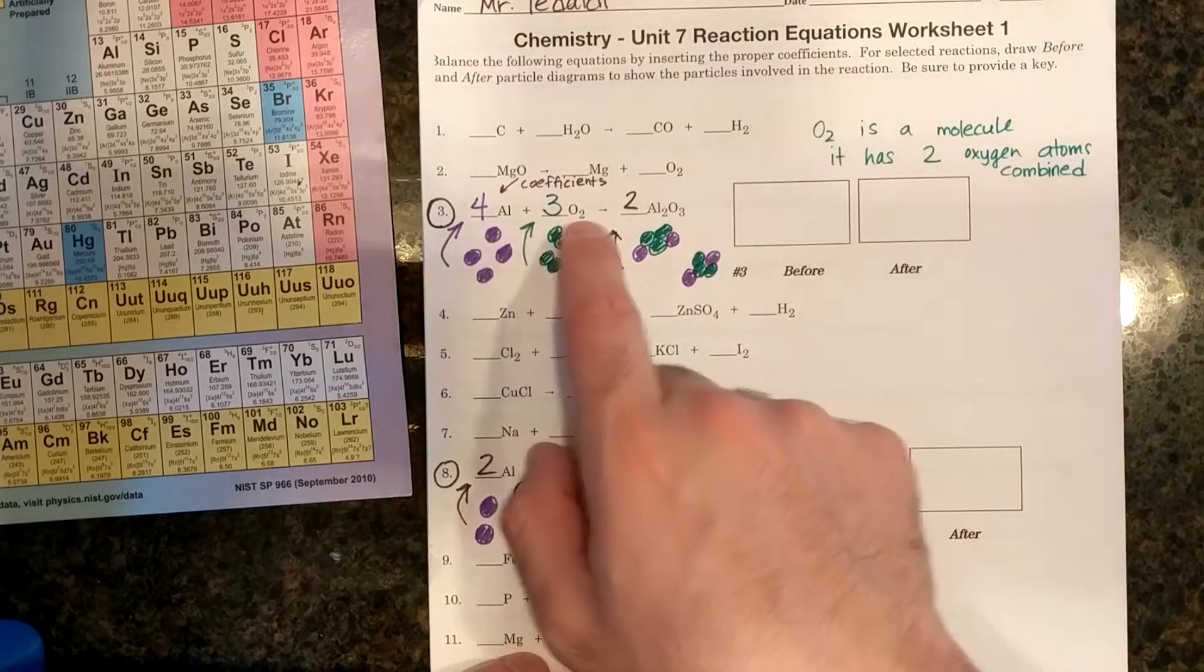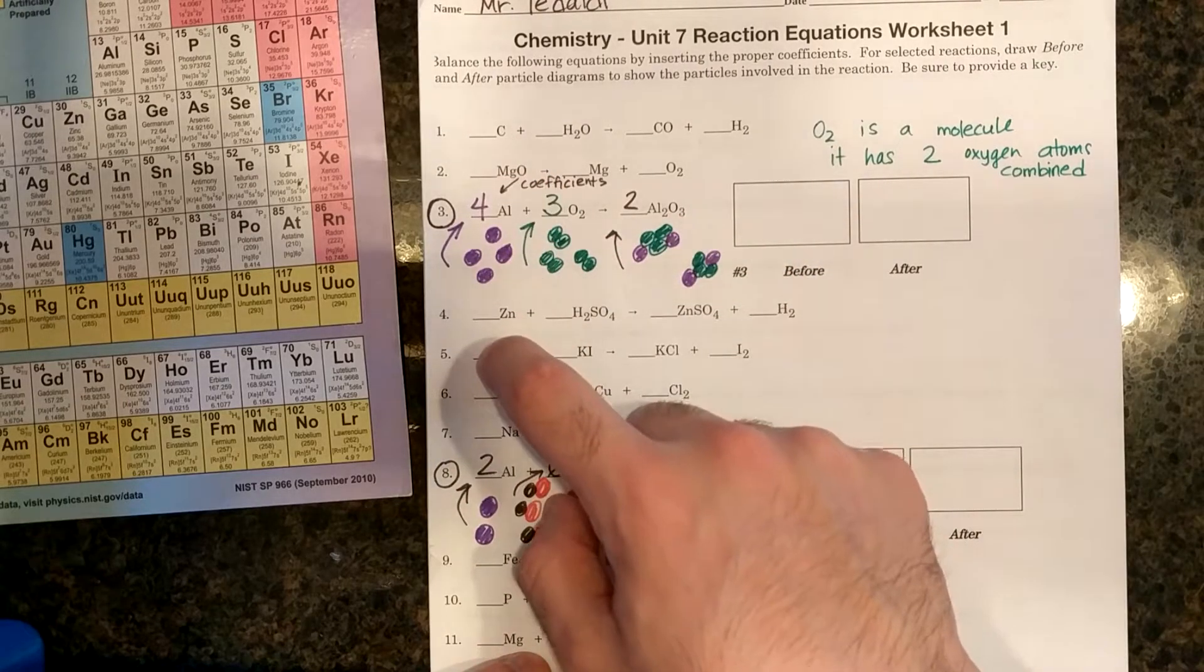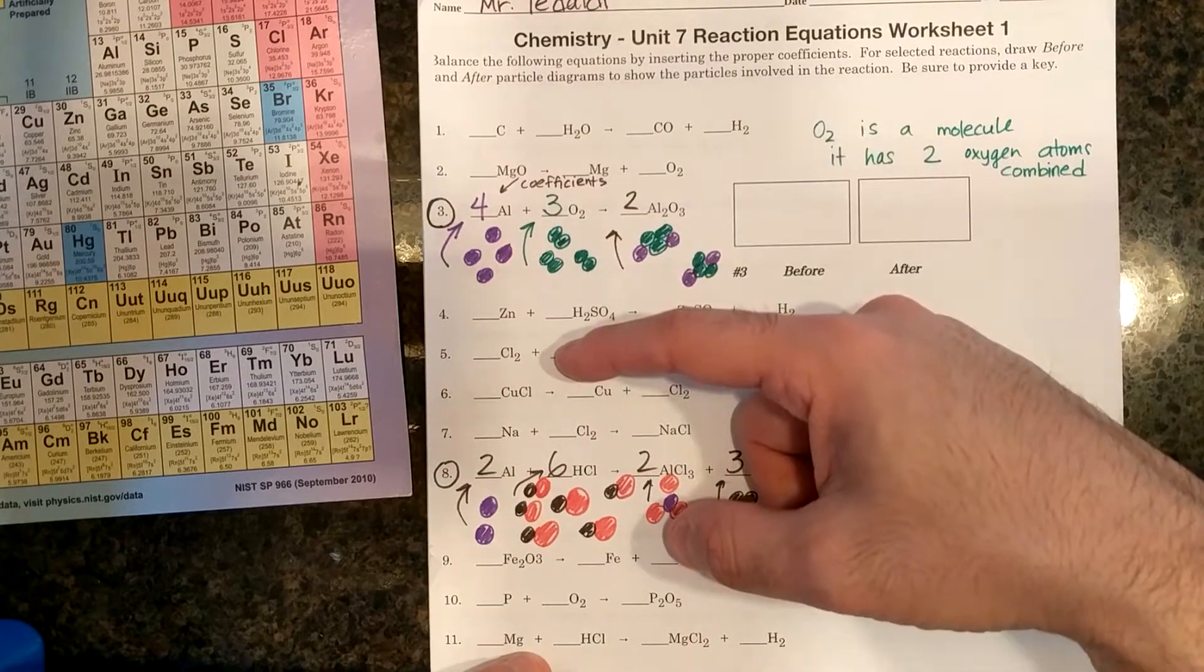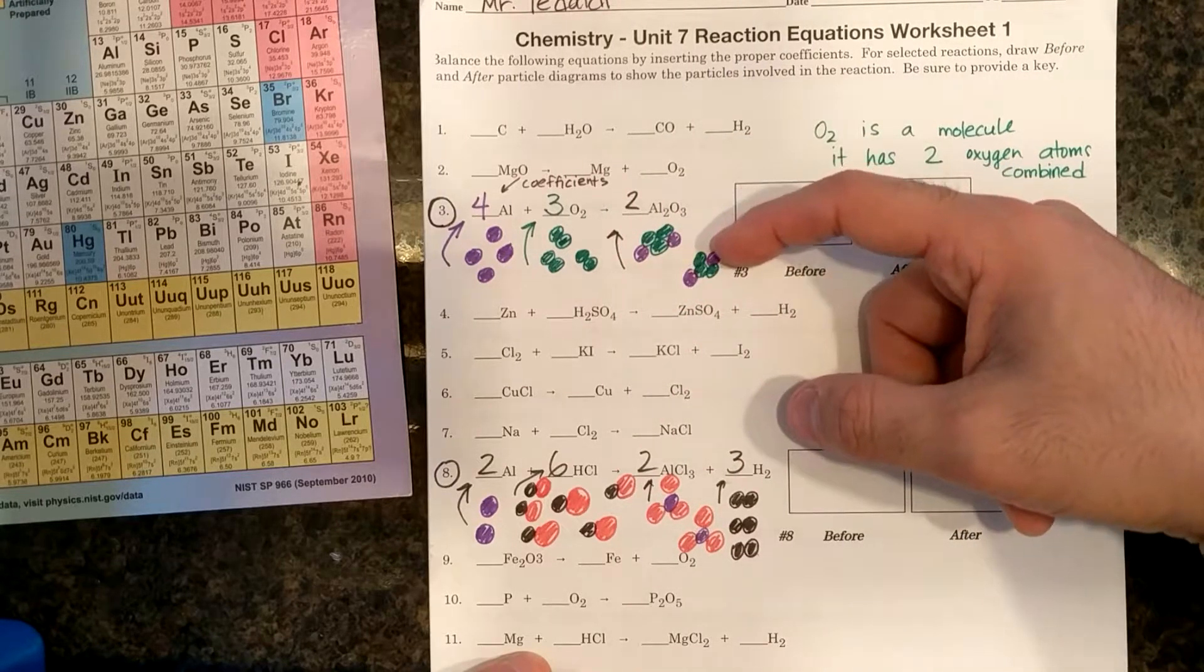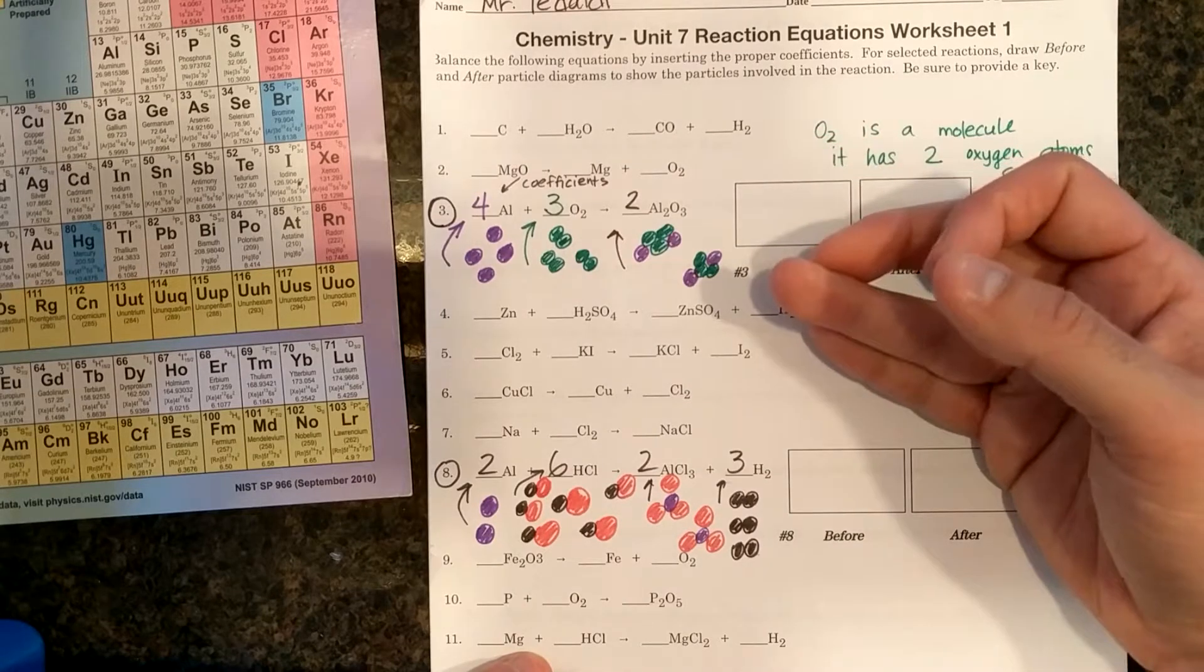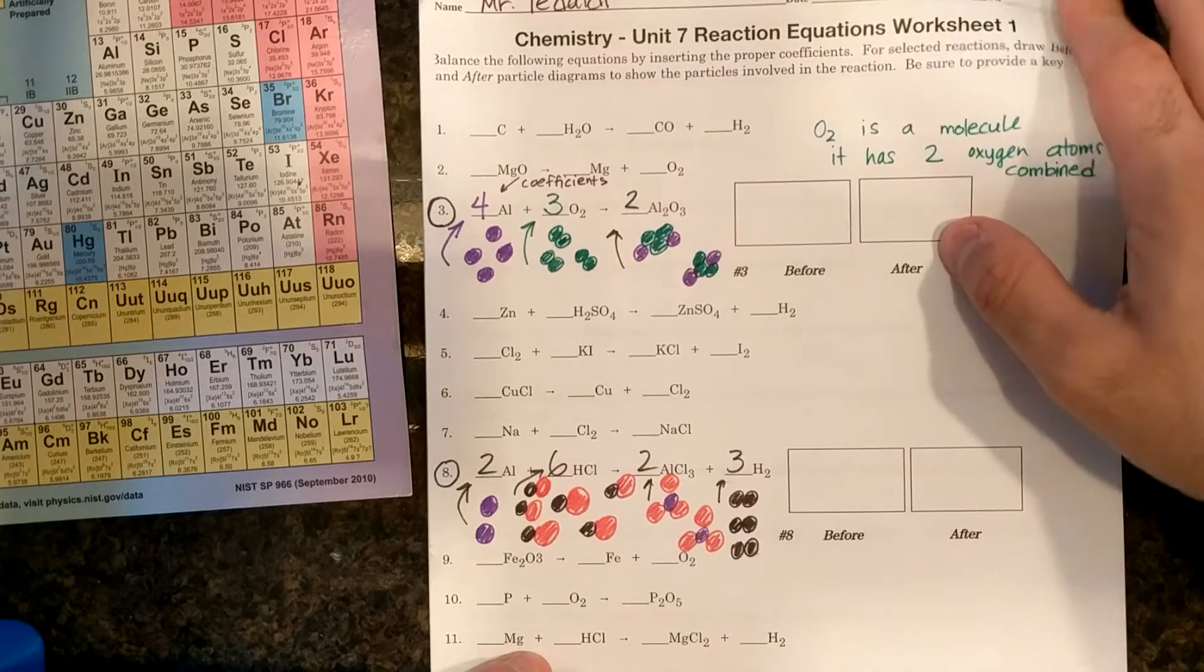So for example, for the reaction of aluminum and oxygen to form aluminum oxide, I need four aluminums to react with three oxygens, which are O2, to form two aluminum oxides. Any other ratio would not or any other relationship would not give me a full complete reaction.